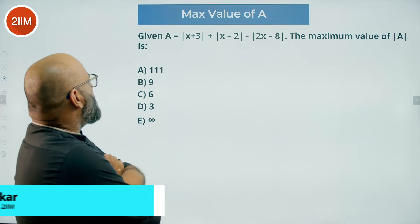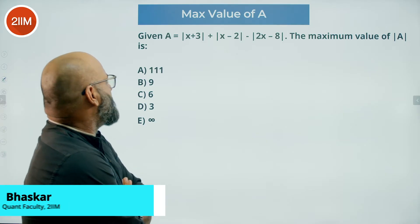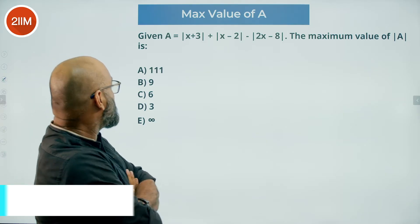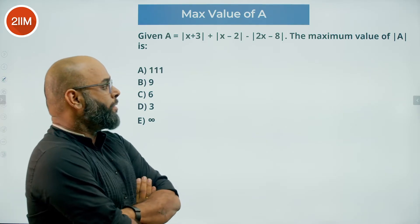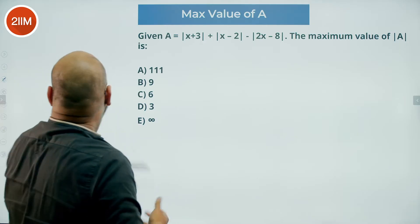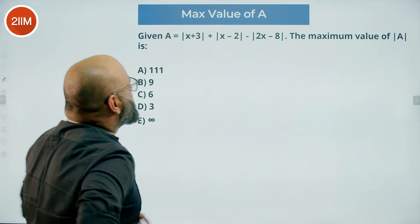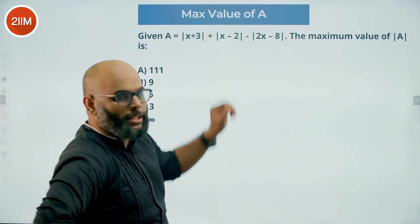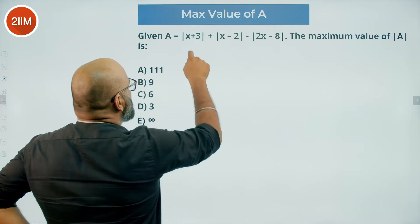Given a is equal to mod of x plus 3 plus mod of x minus 2 minus mod of 2x minus 8, the maximum value of mod a is what we need to find. We see here we have 2x minus 8, so let's split that first.